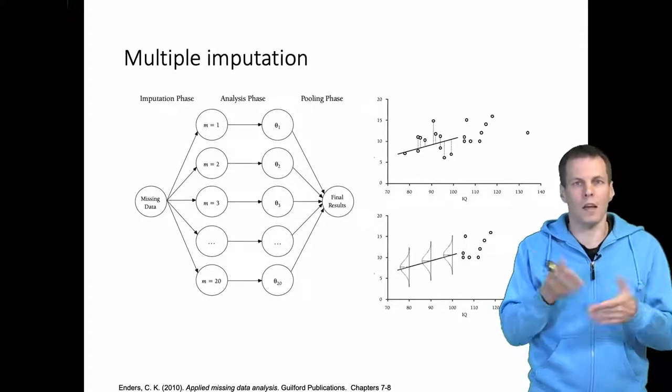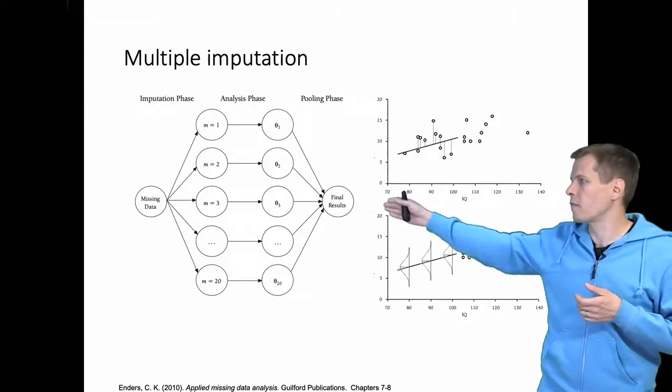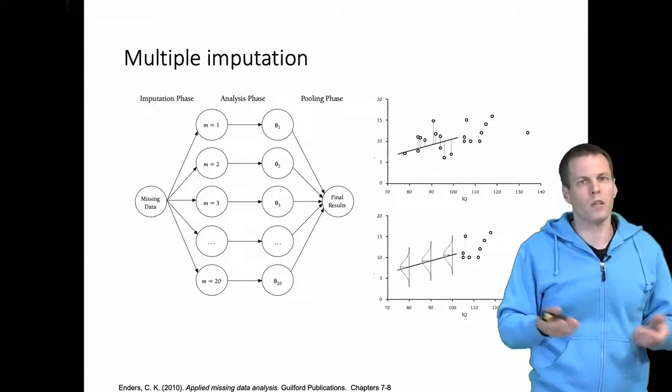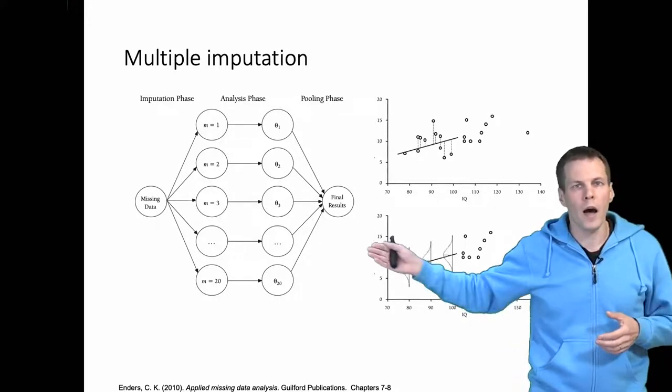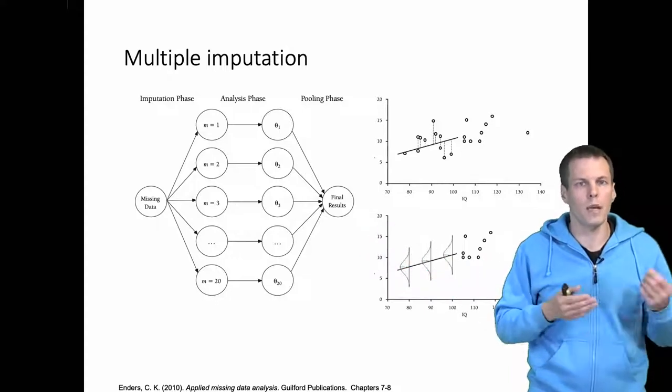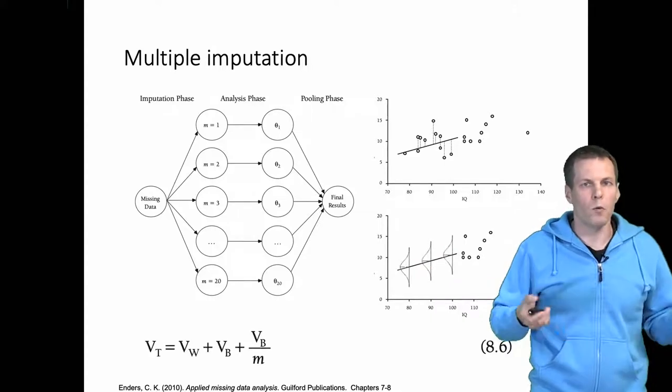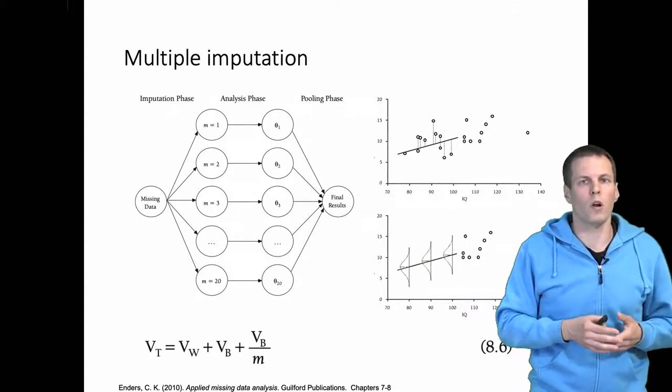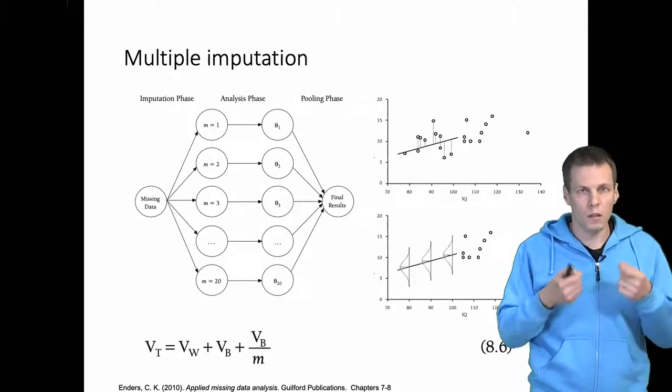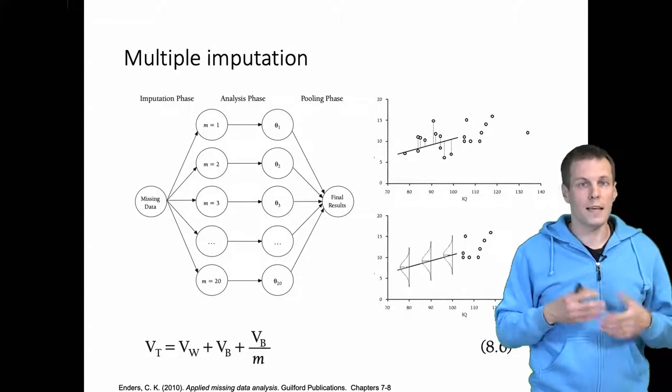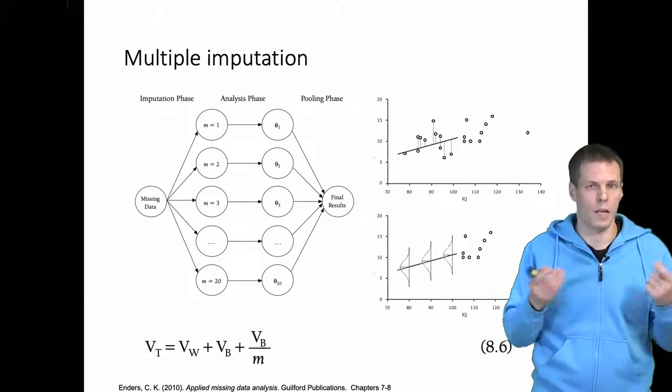After we have these, let's say a hundred analysis results, then we have a summary stage where we have the final results. We call it the pooling stage. If we do regression analysis, the final pooled regression coefficient would be a mean of these repeated analyses and then the standard error would be calculated using this kind of formula. You don't need to understand the idea because this is something that your software will take care of, but it's useful to know that this exists if you need to for some reason do the pooling phase yourself manually.